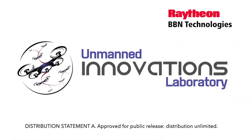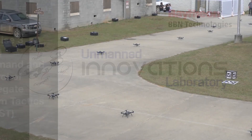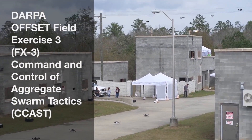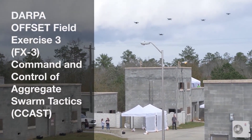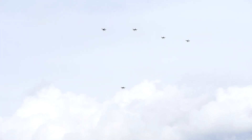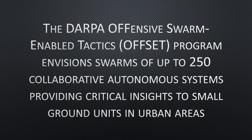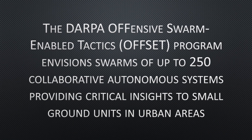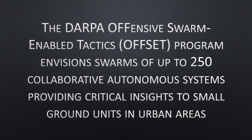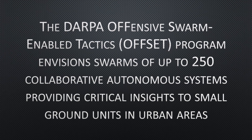This video presents field tests of a novel unmanned system swarm control framework — Commanding Control of Aggregate Swarm Tactics, or CCAST — being developed by the Raytheon BBN Technologies Unmanned Innovations Lab as part of the DARPA Offset program. The CCAST framework orchestrates the planning, simulation, deployment, monitoring, and evaluation of swarms, currently up to 250 heterogeneous collaborative autonomous agents.